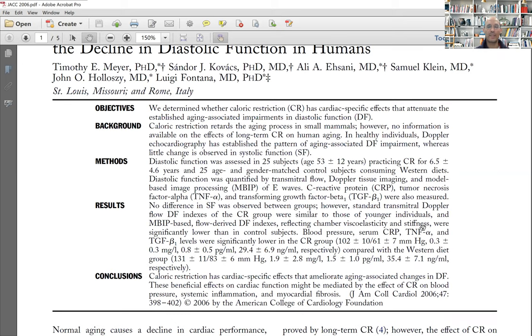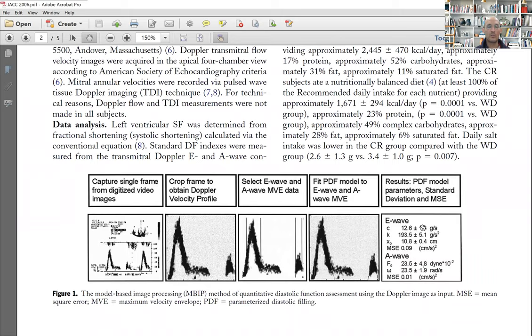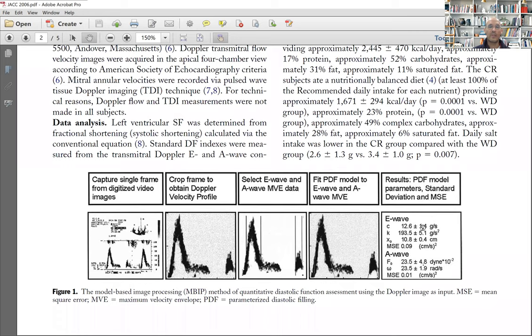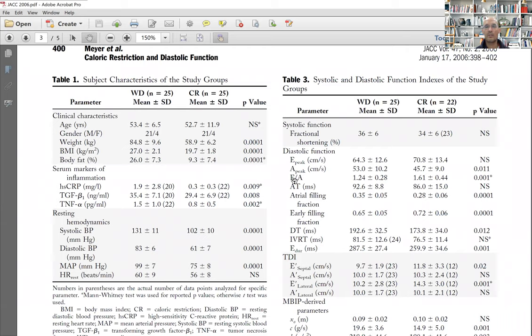Now, let me show you table one of this paper. Again, as I said, in animals George Tuffet has shown that calorie restriction slows cardiac aging and improves diastolic function. And here we show that in people who are 53 years old, the groups age and sex matched, the E-A wave ratio and many other parameters like atrial filling fraction and early filling fraction are much better in the CR individuals.